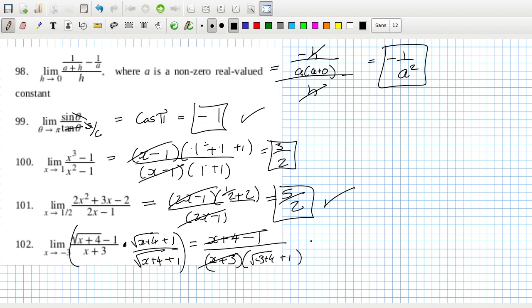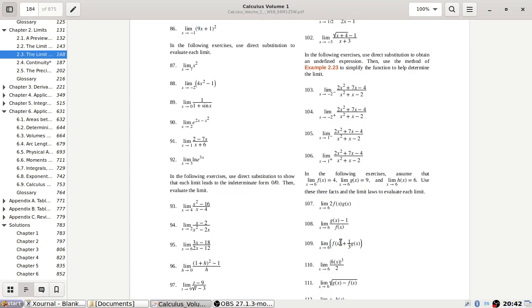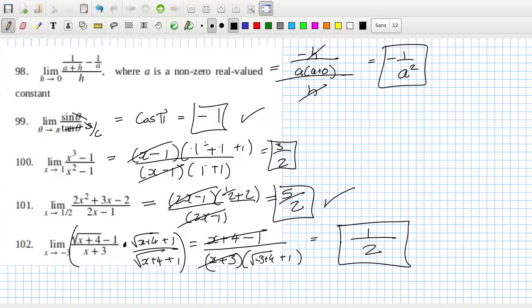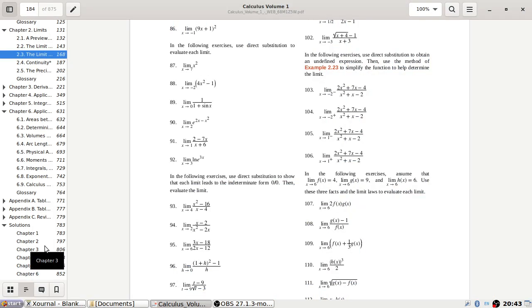So that will be 1 over 2. Okay. Oh yeah, I never checked that these are undefined, but they are, because that's zero over zero, that's sine zero over tan zero, which is zero, zero over zero, and this will be zero over zero, and this will be one minus one, zero over zero. So they are all, trust me, you can put it in on the calculator, but they're all undefined at their limit point.